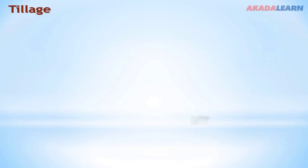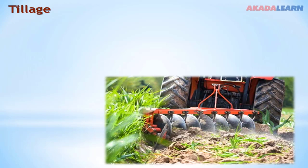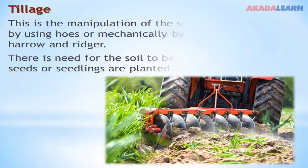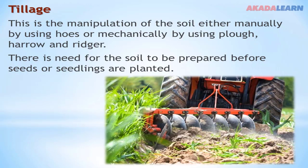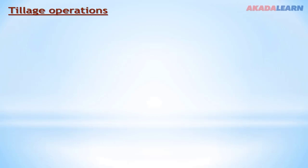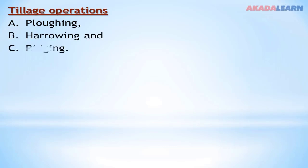Tillage. What is tillage? Tillage is the manipulation of the soil, either manually by using hoes, or mechanically by using a plough, harrow, and ridger. There is a need for the soil to be prepared before seeds or seedlings are planted on it. One of the major reasons for tillage is to prepare the soil so that it will be suitable for crop cultivation. Tillage operations include ploughing, harrowing, and ridging.